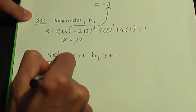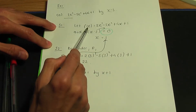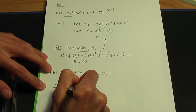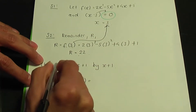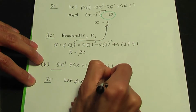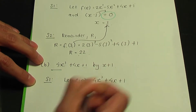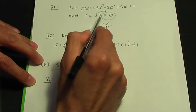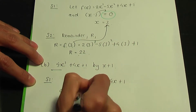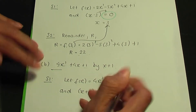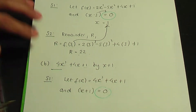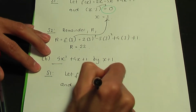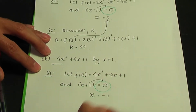Let's have a look at step 1. f(x) is your polynomial, so I'm going to let f(x) be 4x cubed plus 4x plus 1. You take the linear term, which is x plus 1, and you equate that to 0 always. So if you rearrange, the x value — taking the plus 1 to the opposite side — is minus 1.